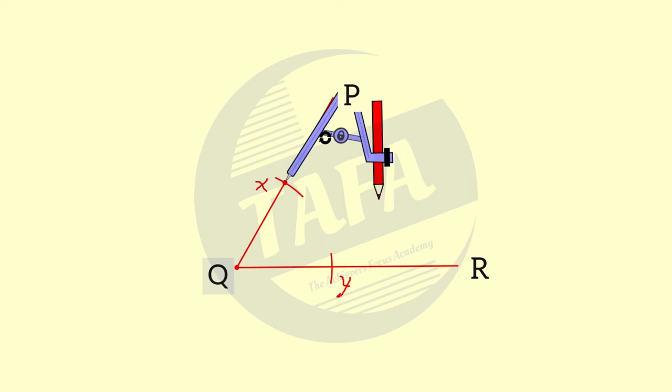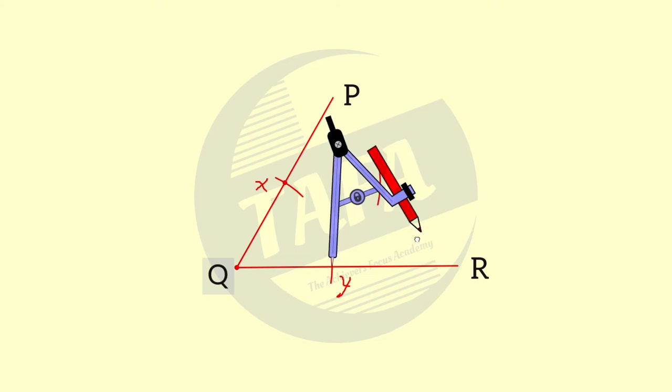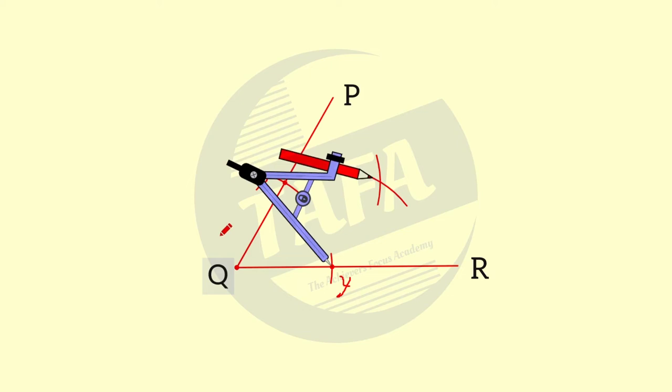With center y and the same radius, we draw an arc to cut the first arc at a point s. Then using a ruler, we join QS.